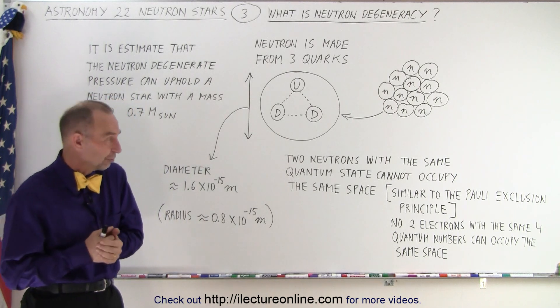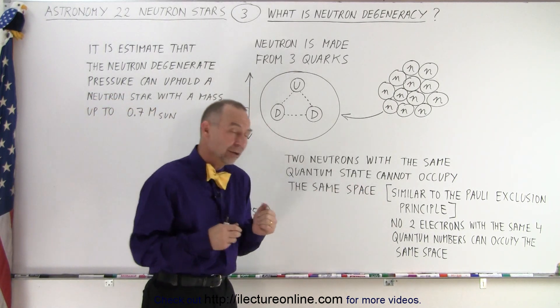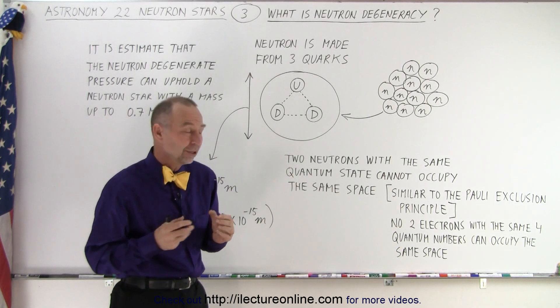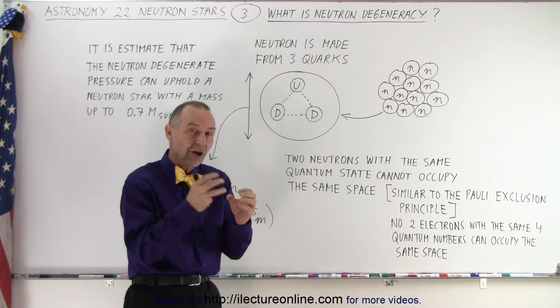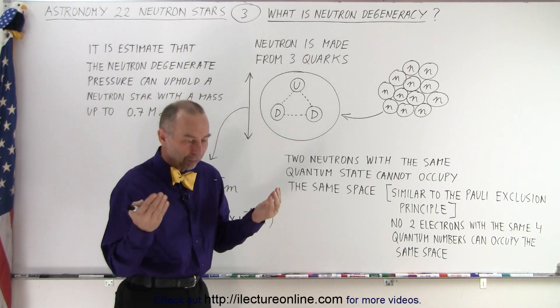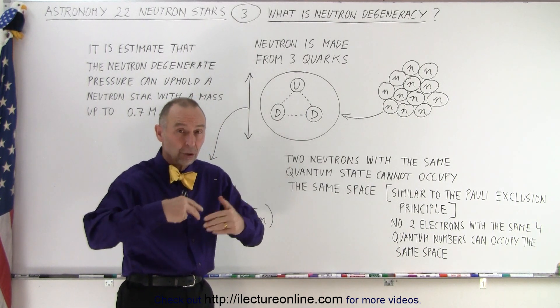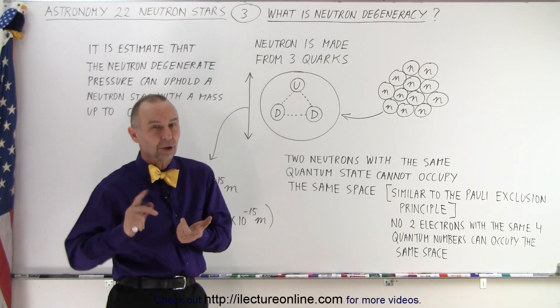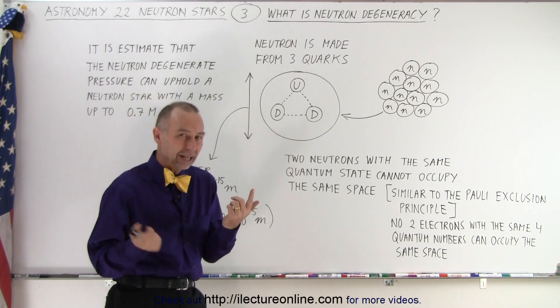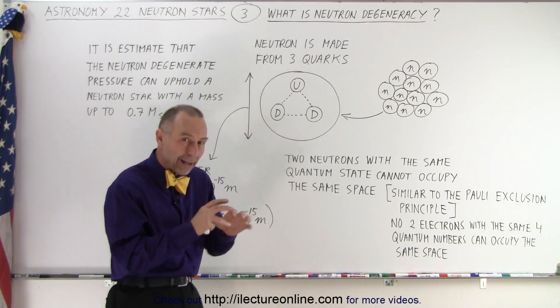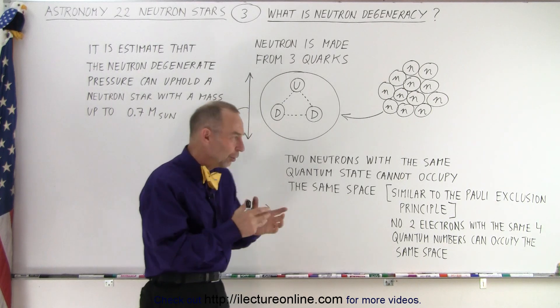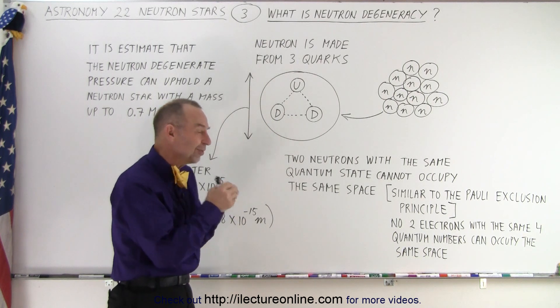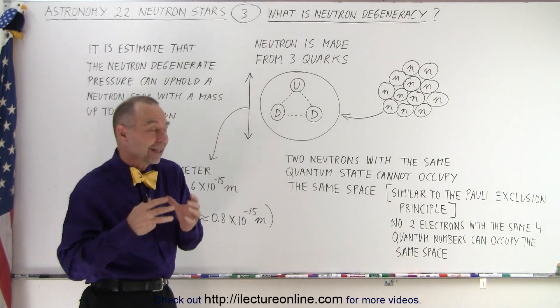It's called the Pauli Exclusion Principle, which we have right here, which says that if two electrons have the very same four quantum numbers, you cannot have the two electrons occupying the same space. In other words, for two electrons to be in the same orbital around the nucleus of an atom, they have to have at least one of their quantum numbers different. That's why we have a spin-up and a spin-down electron occupying the same space in the same orbital around the nucleus. So two neutrons with the very same quantum state cannot occupy the same space.